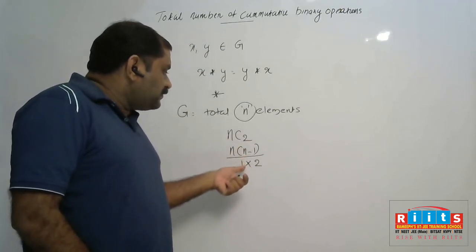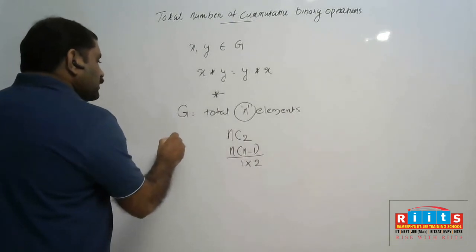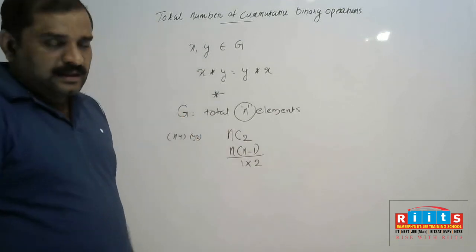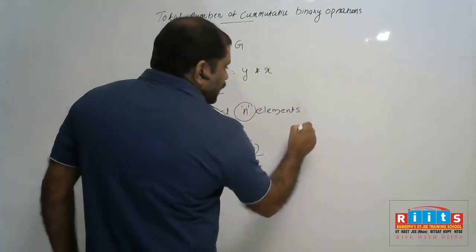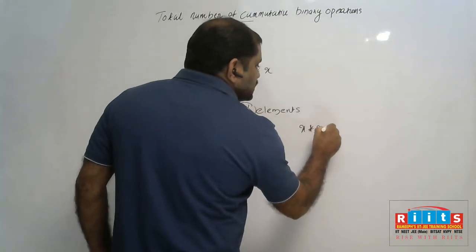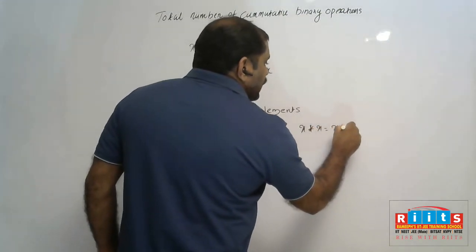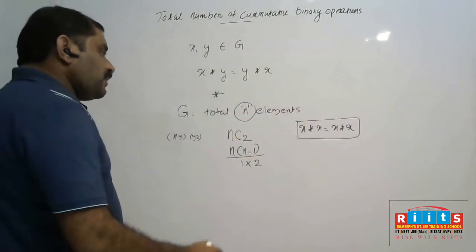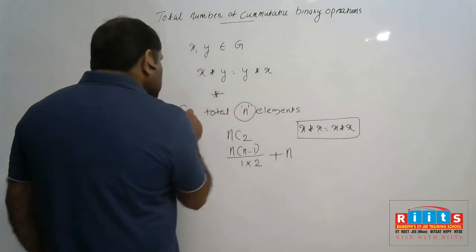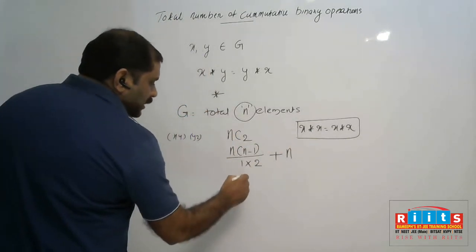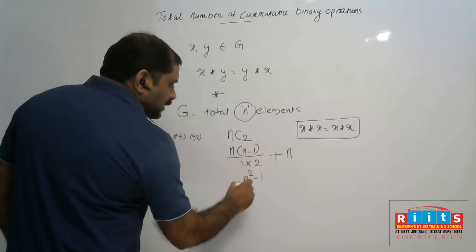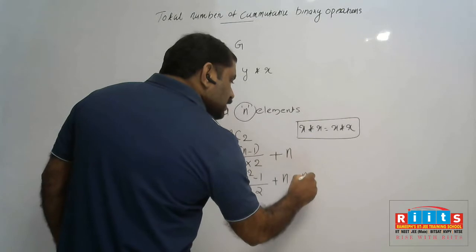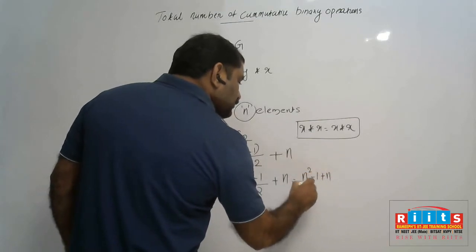So we take pairs x,y and y,x — that type of element. Also x★x equals x★x is also a commutative binary operation. That can be done in n ways, since set G contains n elements. So we get (n²-1)/2 + n.